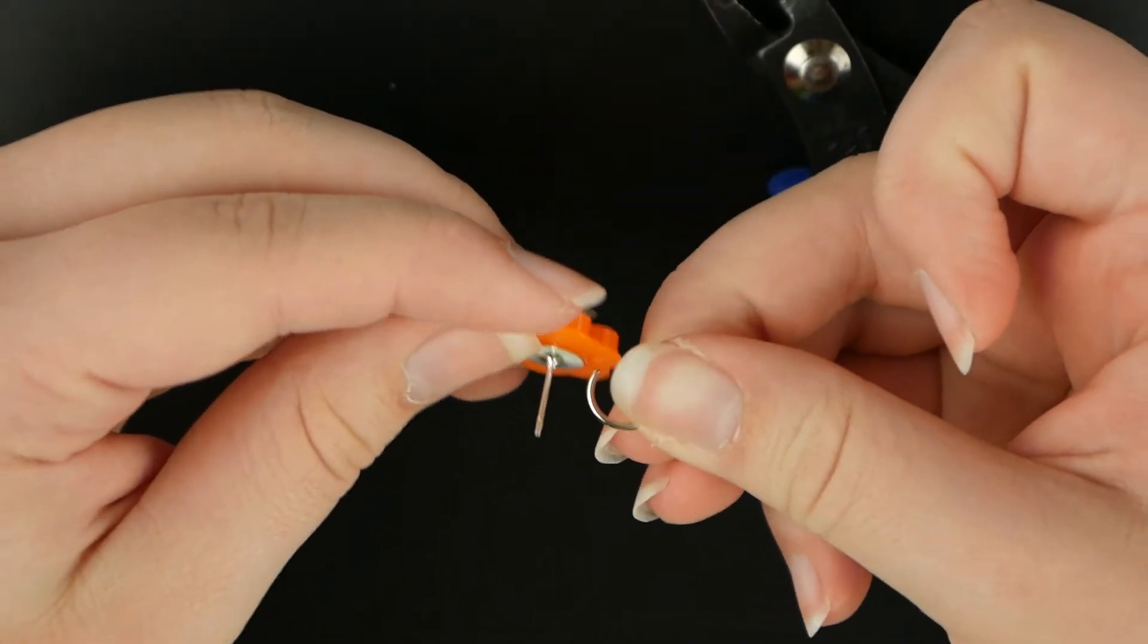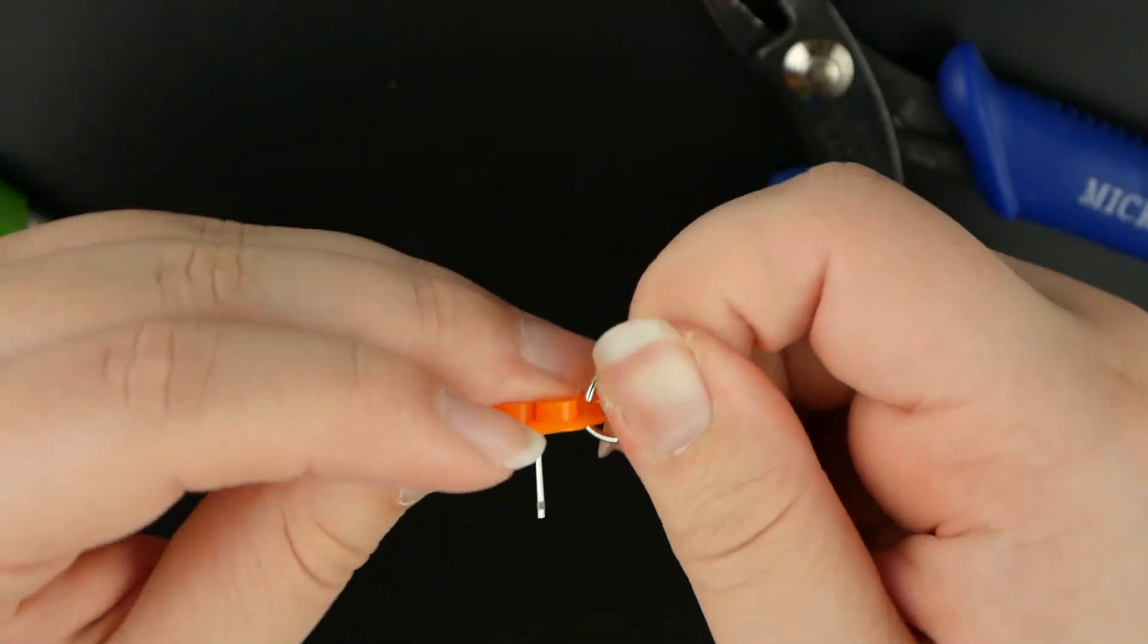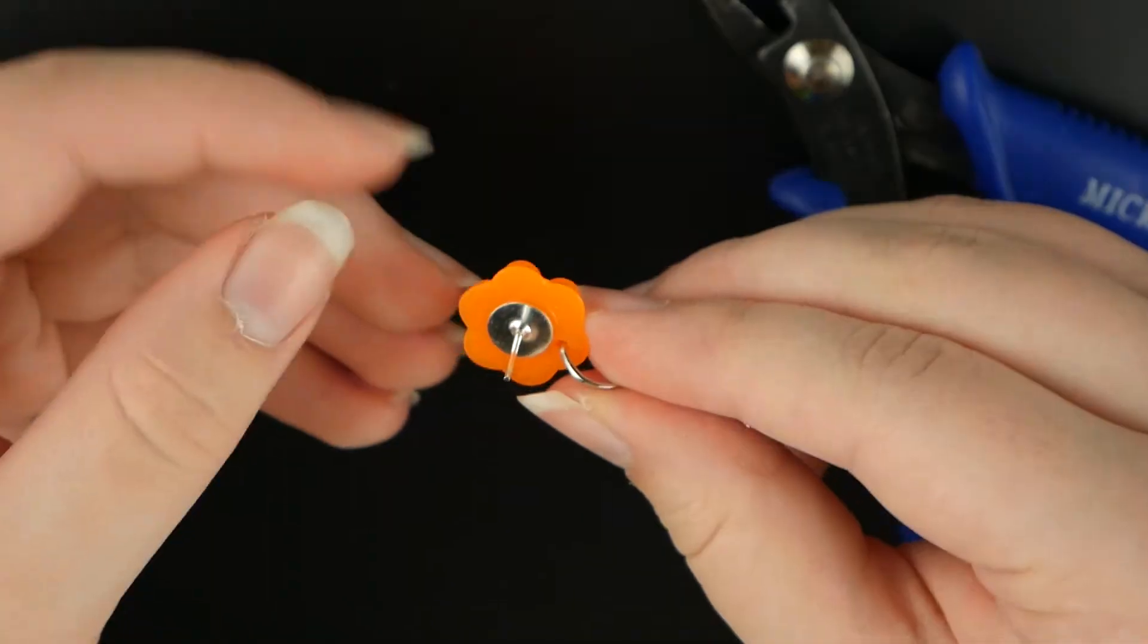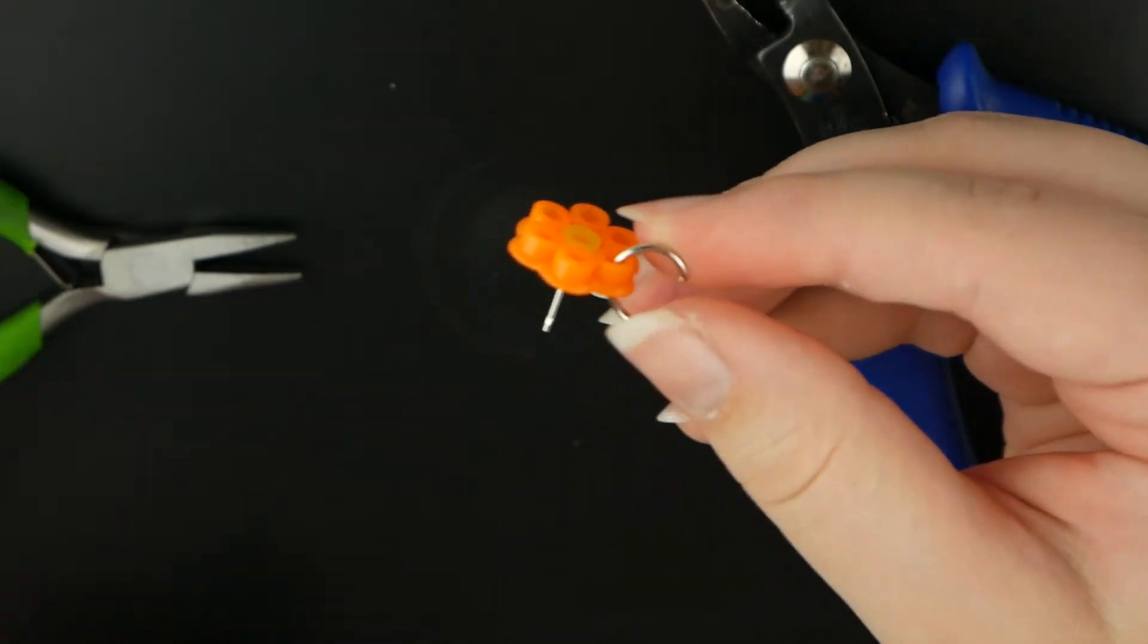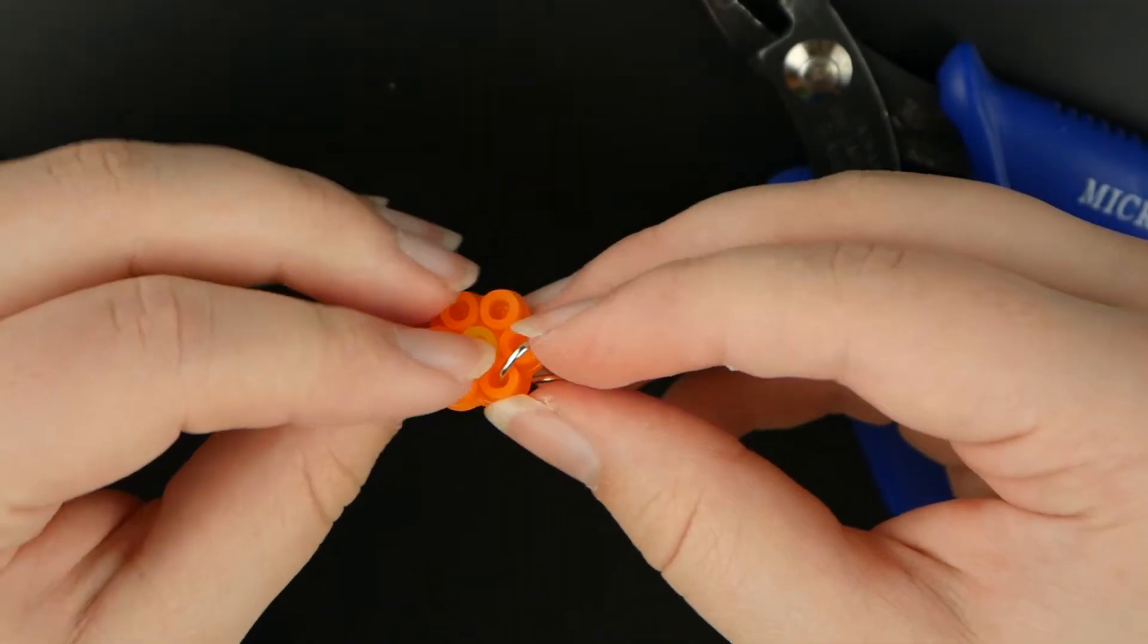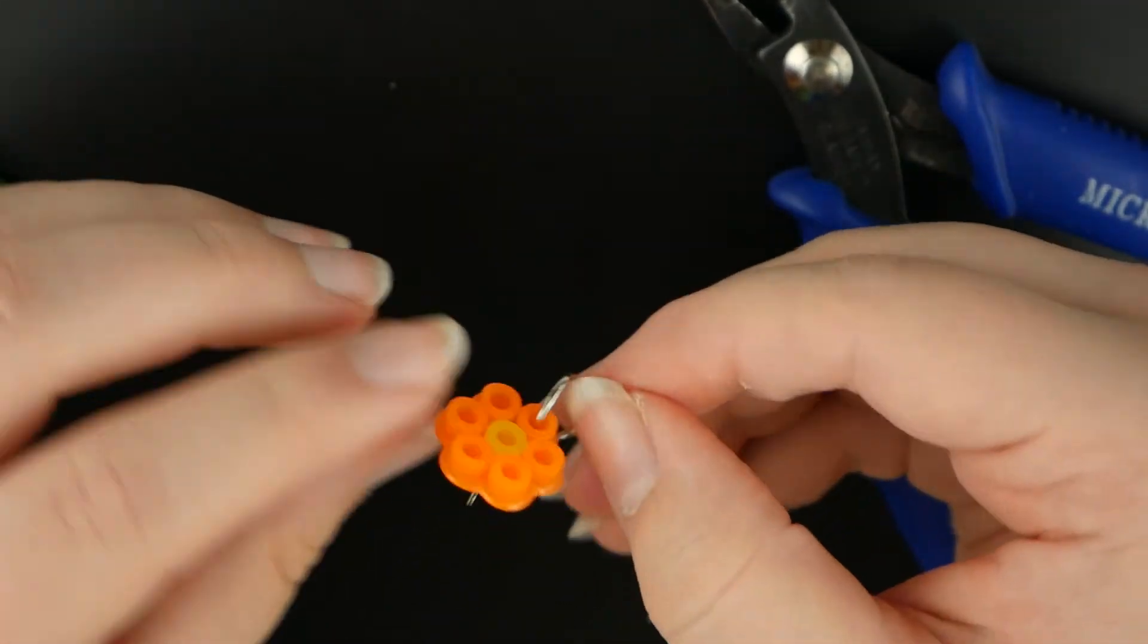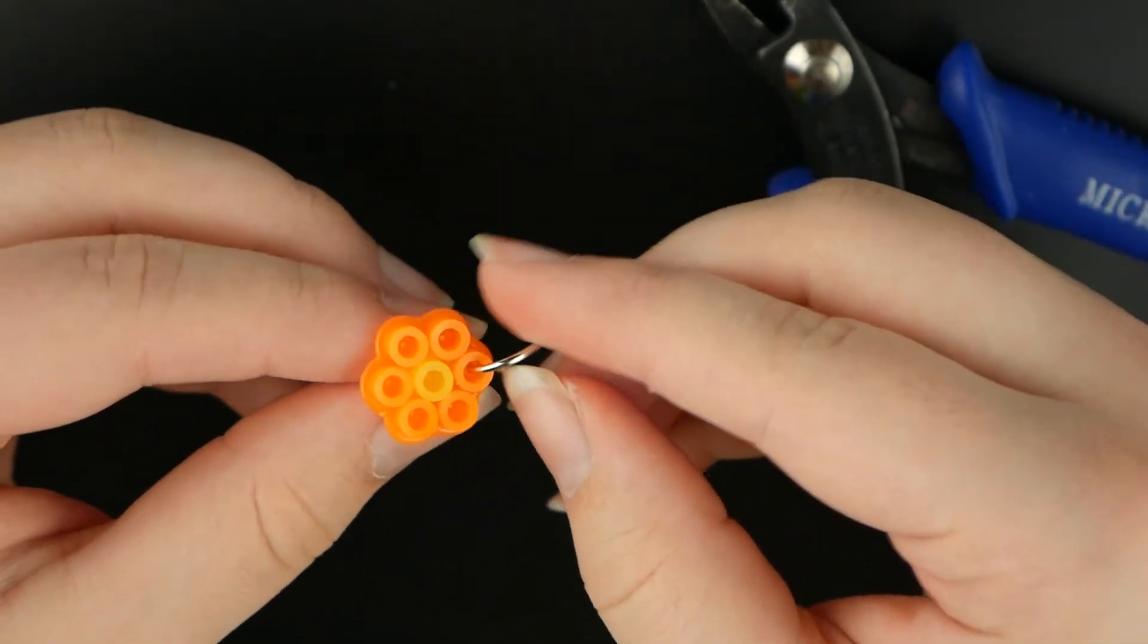You're going to take your big jump ring, open it up, put it through your flower here. Also, another quick little DIY: you can just make super easy little Perler bead flower studs. You don't have to add this part or the jump ring or anything. You could just make a little Perler bead flower, glue a stud finding to it, and it would be super cute.